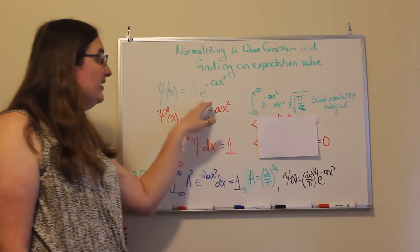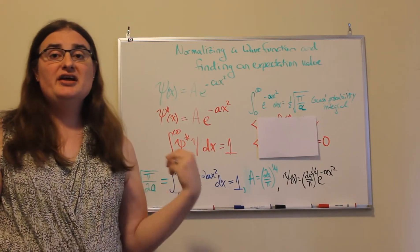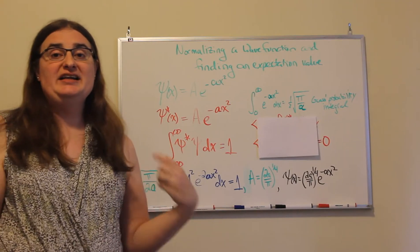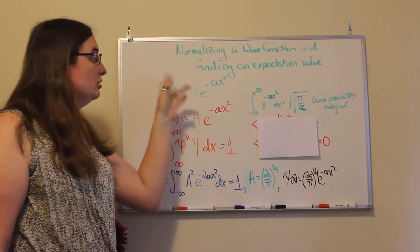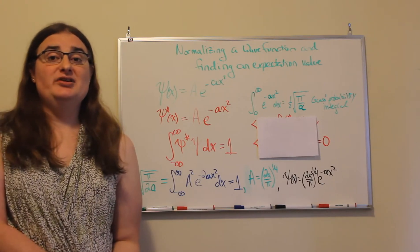So because on both ends we have a function that's heading towards zero, then we should end up getting a finite integral if we go to calculate the integral of the magnitude of this.